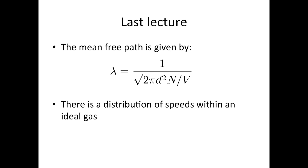Last lecture, we also looked at mean-free path, which is given by the formula: 1 over root 2 pi d squared n over V. We also noted that there is a distribution of speeds within ideal gases. So we can calculate, for example, the root mean squared velocity for a gas, which is proportional to its temperature, but it doesn't mean all particles travel at that speed — it's just the average particle speed.